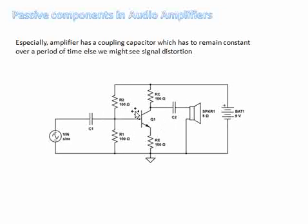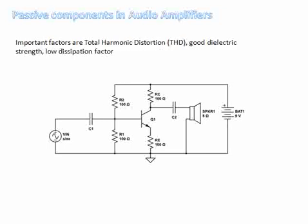If capacitance is not constant, we might introduce distortion to the signals fed to the speakers, giving a very bad user experience. Selecting the right capacitor is therefore crucial. Additionally, the capacitors used should have a good THD value — total harmonic distortion — high dielectric strength, and a low dissipation factor. These are three important parameters for capacitors used in audio amplifiers.